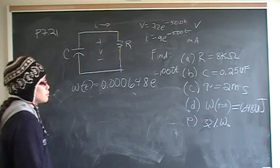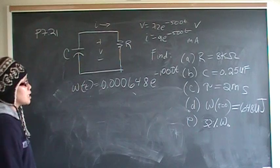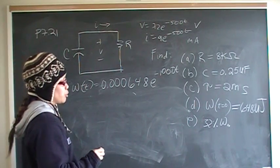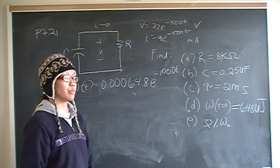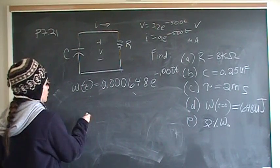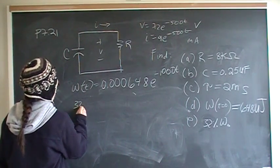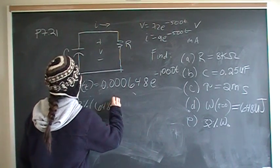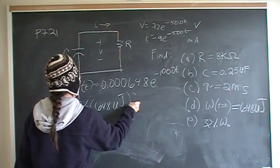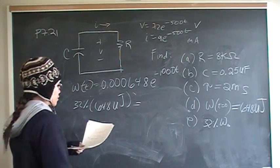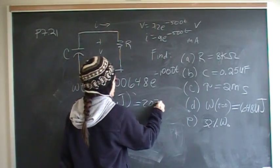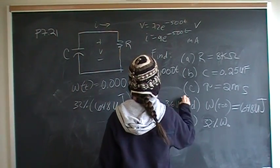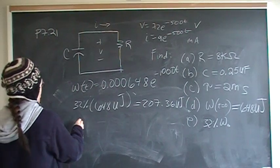And we want to find out for part E, what is the time when I have 32% left, or when 68% has dissipated? And for that we take 32% of 648 microjoules, and that gives me 207.36 microjoules.